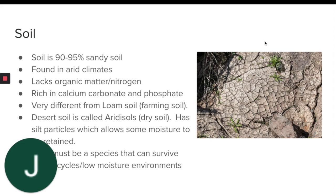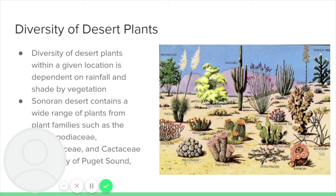The soil in the desert is 95% sandy soil, with very little organic matter and nitrogen, but it is rich in calcium carbonate and phosphate. The soil is called aridosols, which means dry soil in Latin. Aridosols are found in arid desert climates and have silt particles that allow some moisture to be retained. For plants to grow in desert sandy soil, they must be able to withstand drying cycles and environments that cannot retain much moisture. Desert plants are highly diverse in areas with more rainfall. The Sonoran Desert contains more than 2,500 different species of desert plants, more than any other desert in the world.